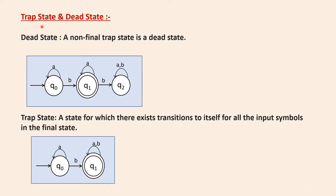In the previous video we understood what is a trap state and a dead state. A trap state is a final state to which all the transitions are looped to itself. Here Q0 is the start state and Q1 is a final state. N number of A's are looped in Q0, and when the first B is encountered Q0 moves to Q1. After that, n number of A's and B's are looped in Q1 itself, so there is no transition happening from Q1 to any other state. This is called a trap state because Q1 is a final state.